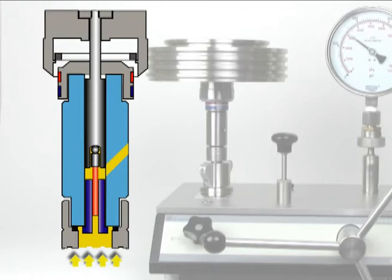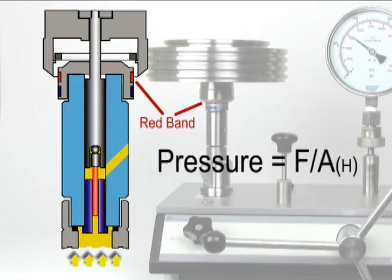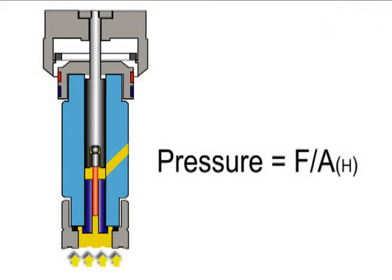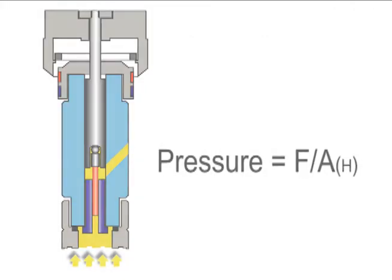With the masses floating within the red band, a second equilibrium is achieved and the pressure generated is equal to the force created by the masses divided by the effective area of the high-pressure piston.